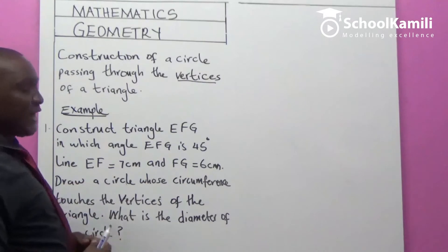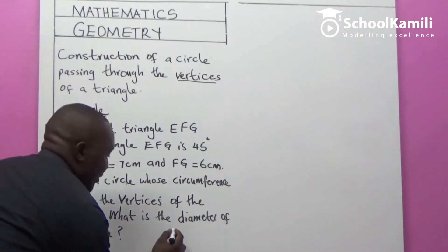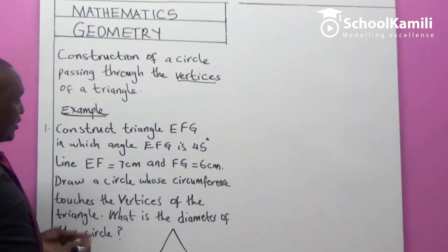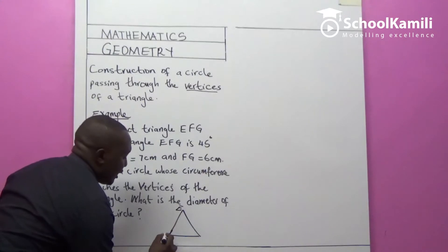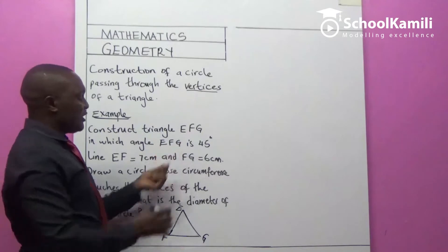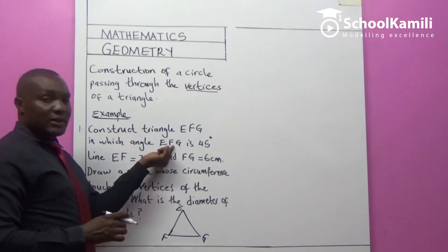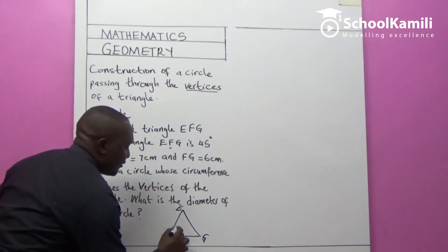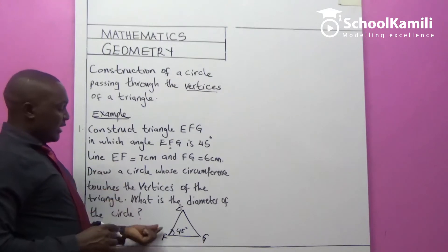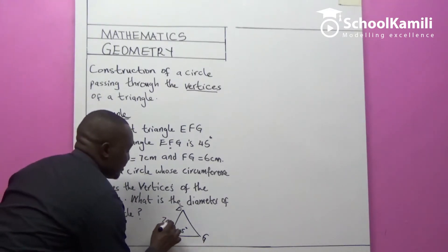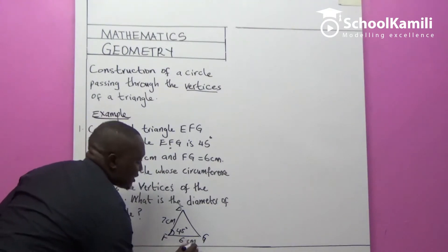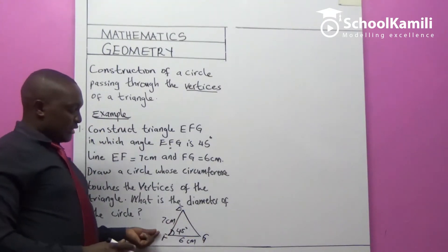First of all, make a small sketch of what we are going to construct. That's triangle E, F, G — such that angle EFG is 45 degrees at vertex F. Line EF is 7 cm and line FG is 6 cm. After you have constructed the triangle, we then construct the circle.